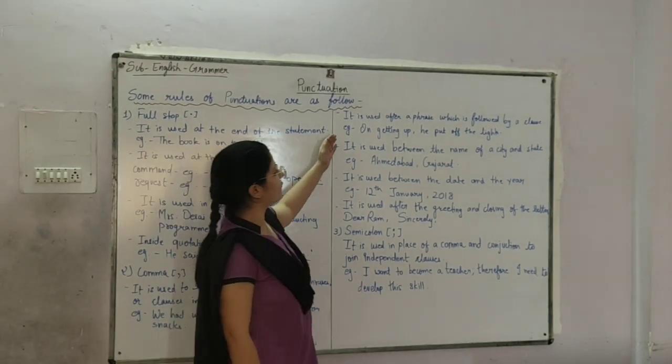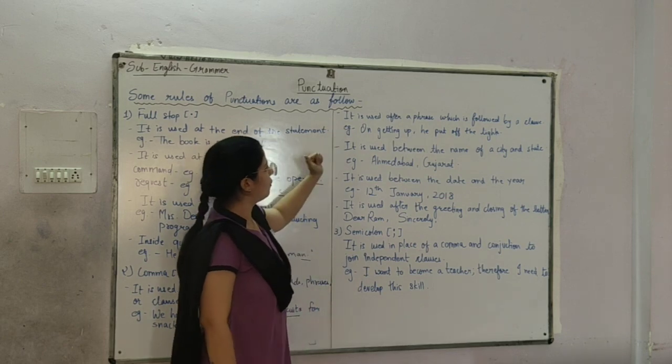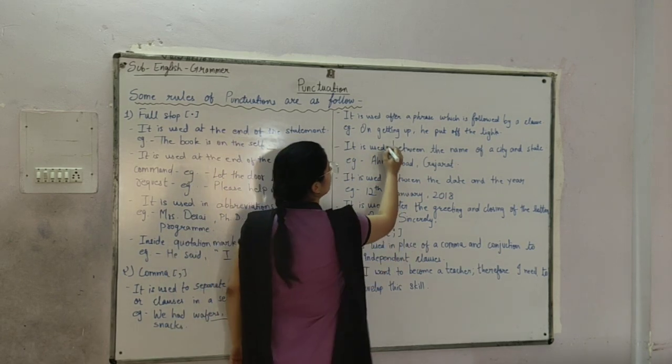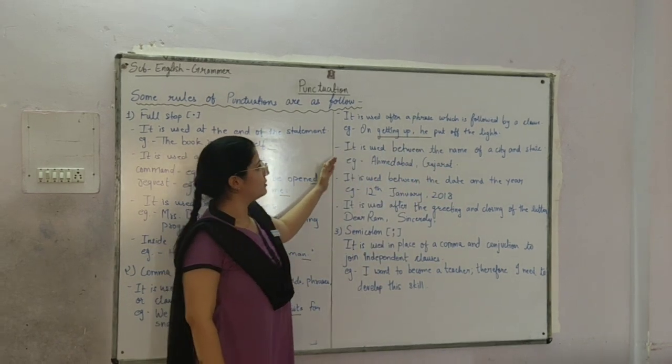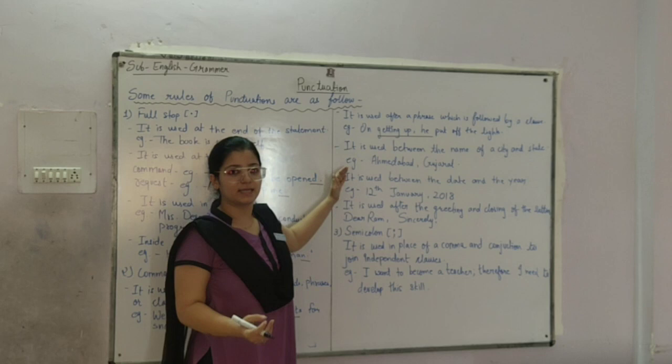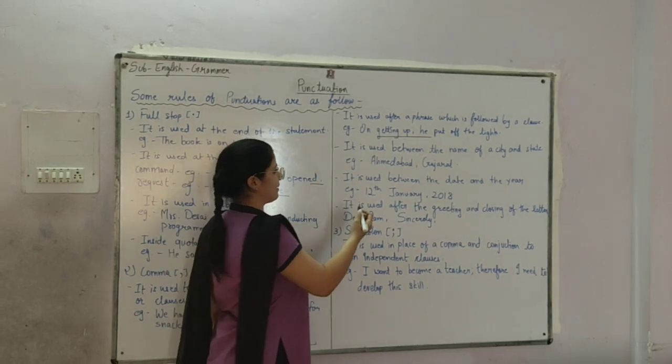Next, it is used for a phrase which is followed by a clause. For example, on getting up, he put off the lights. Next, it is used between the name of the city and state. For example, Ahmedabad, Gujarat.